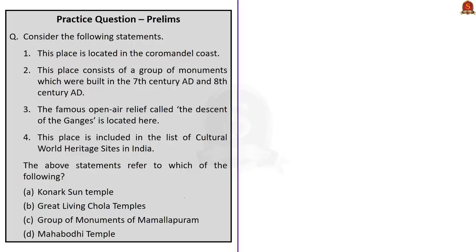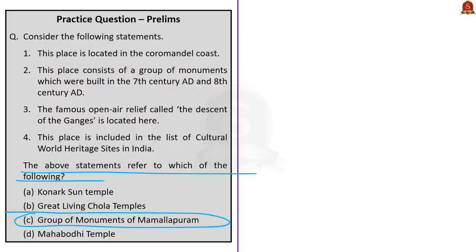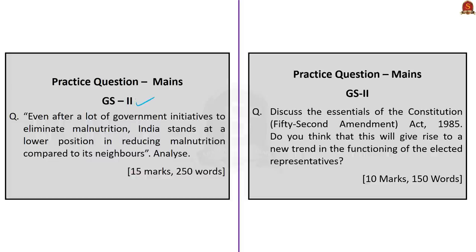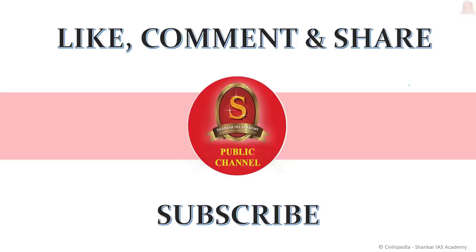The next question gives four statements and asks which place they refer to: located on the Coromandel Coast; consists of a group of monuments built in the 7th and 8th century AD; the famous open-air relief called the Descent of the Ganges is located here; and the place is included in the list of cultural World Heritage Sites in India. The statements refer to the group of monuments of Mahabalipuram — the correct answer is option C. We have also given two practice main questions in GS2 — you may write answers and post in the comment section. This concludes today's The Hindu News Analysis. If you like the video, click the like button, comment, share, and subscribe to Shankarai's Academy YouTube channel for more updates on civil service exam preparation.